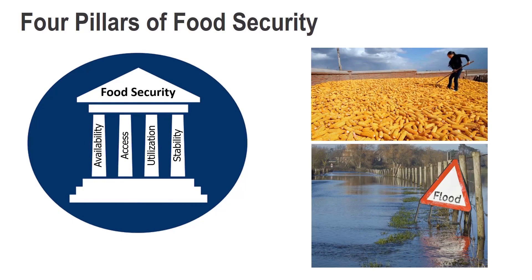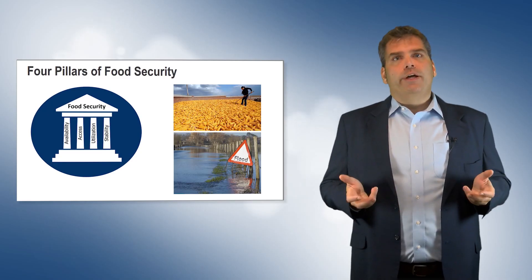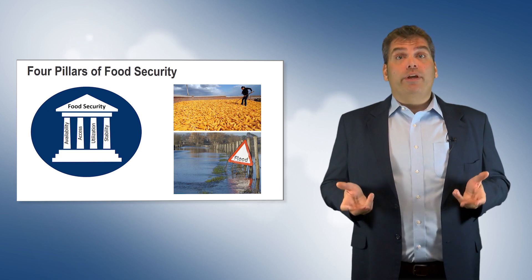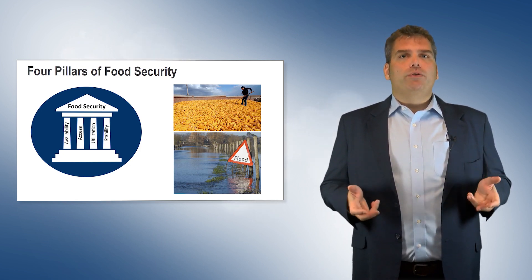Availability deals with the supply side of food production. It not only concerns the amount of food produced, but whether food can be brought to market and exchanged for some form of currency. Droughts, floods, land degradation, and poor infrastructure can greatly reduce availability.